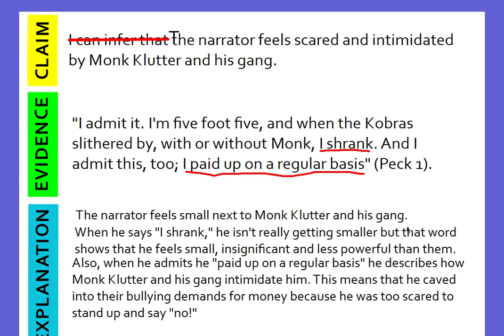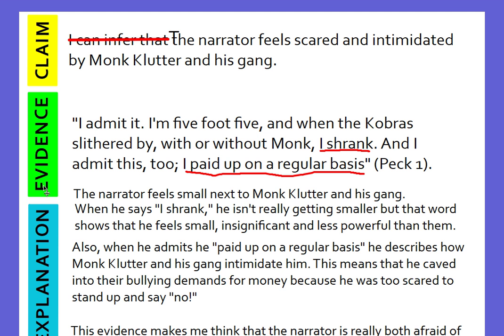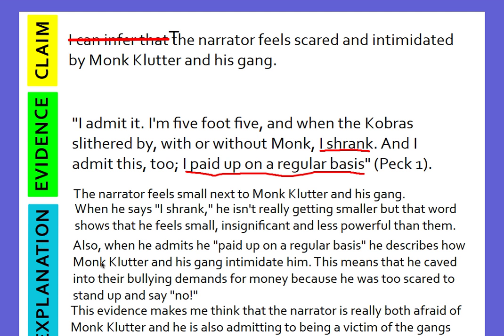Now my last step is to show how my evidence helped me get to this inference. This evidence makes me think that the narrator is really both afraid of Monk Clutter and also admitting to being a victim of the gang's bullying. In this evidence I see that he's scared, he's intimidated, and he's a victim of this bullying just like everybody else in the school. It's really important not to rush this part — I broke down each part of my evidence so that by the end of my explanation, you really have an understanding of my claim and my evidence.